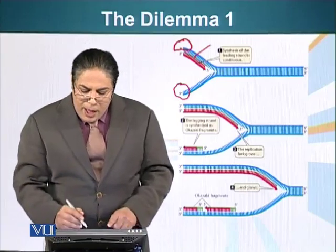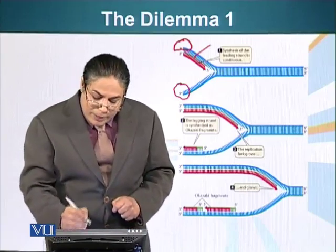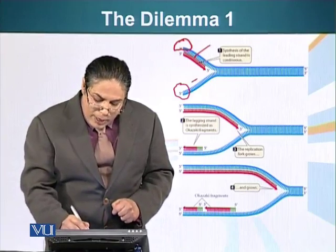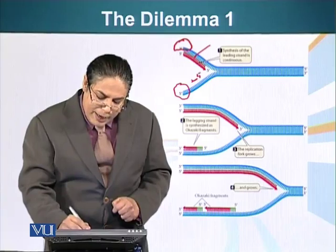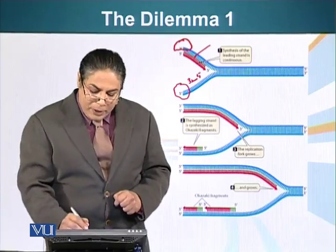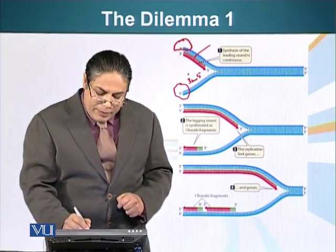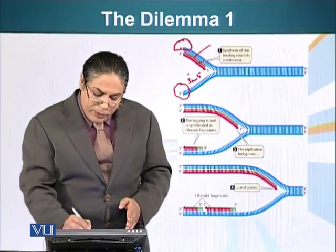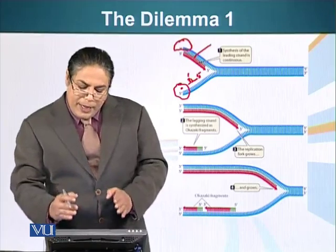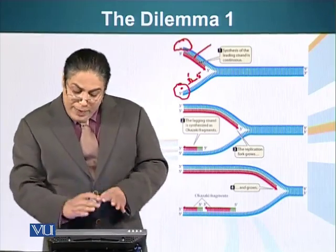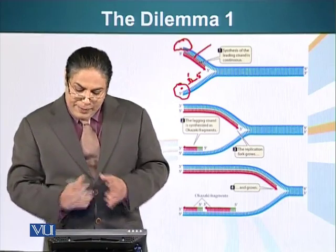This is the leading strand. However, when it comes to the lagging strand, when the primer is made, the orientation of the primer would be that the five prime end would be here and the three prime end would be here. Because if we extend this three prime end, when it becomes complementary to the base over here, it will also be three prime and will still maintain the anti-parallel feature of the DNA.